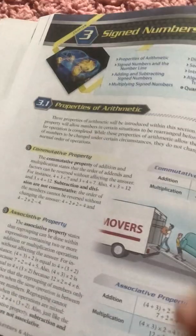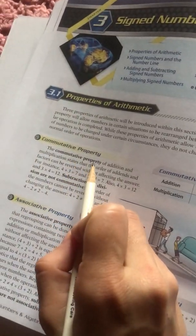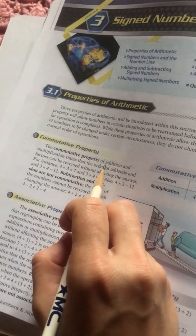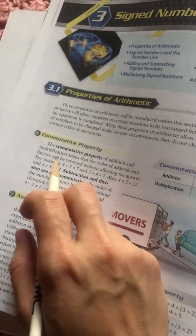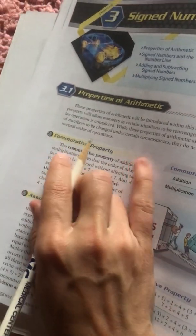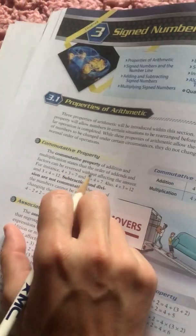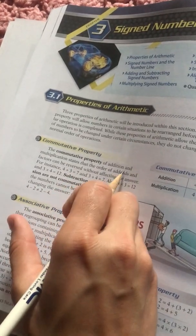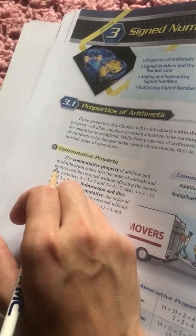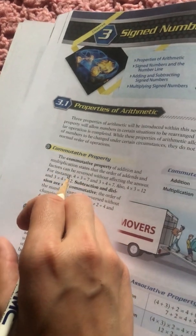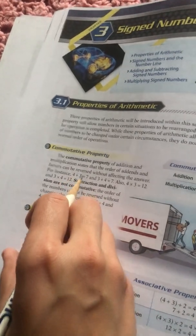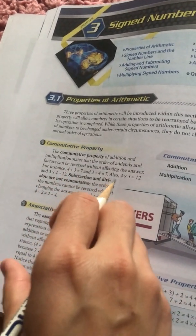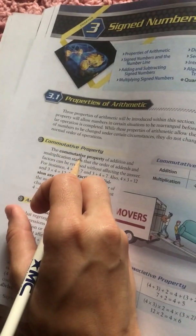This is the beginning of chapter 1. They're really good. They're going to write things that you need to remember in bold, so it's really easy to look back. Commutative property. Let's read and see if this is the one. Of addition and multiplication, it states that the order of add-ins and factors can be reversed without effect. That's the one that we want.